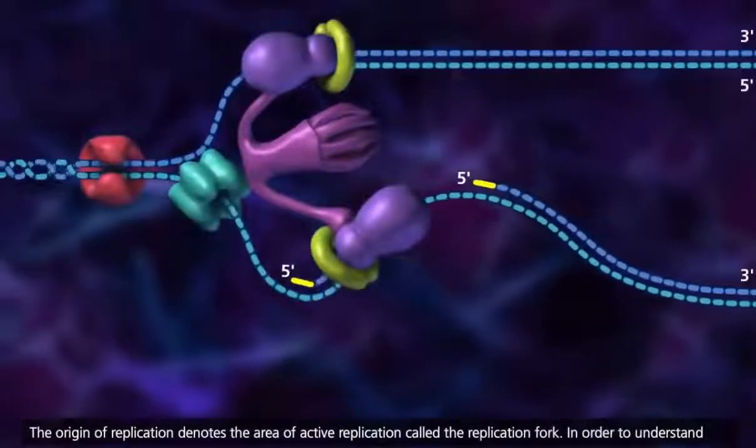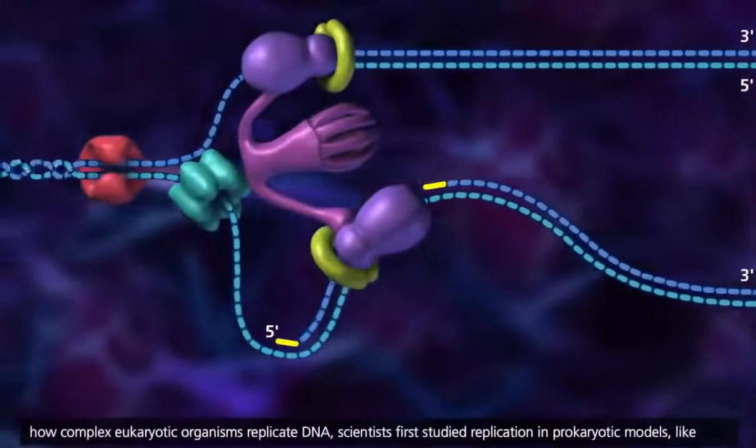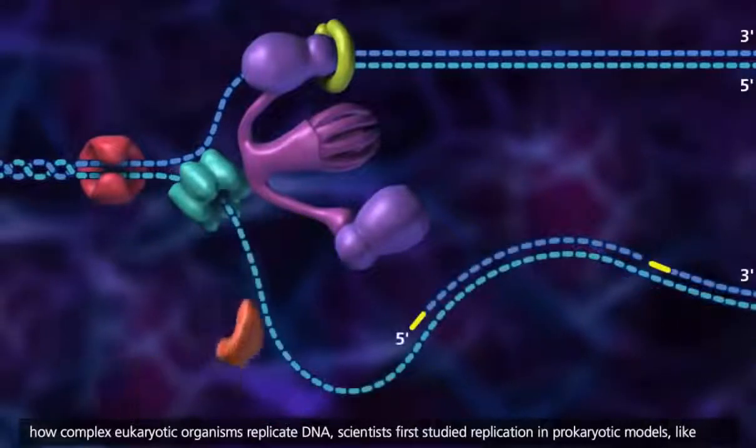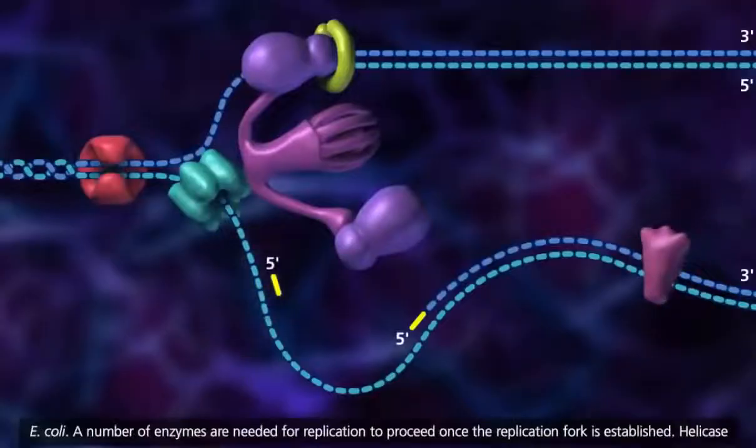In order to understand how complex eukaryotic organisms replicate DNA, scientists first studied replication in prokaryotic models like E. coli.